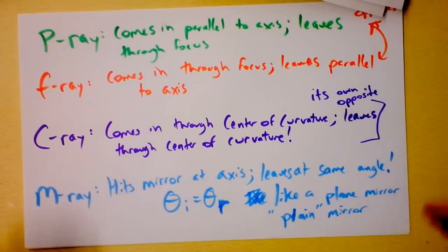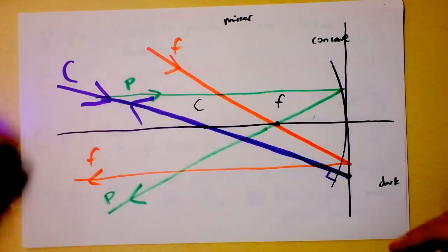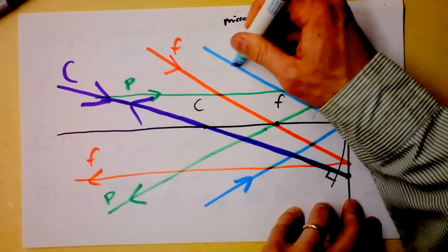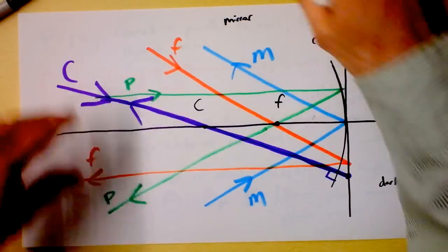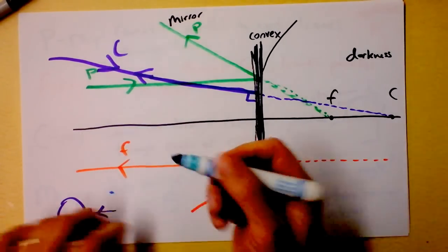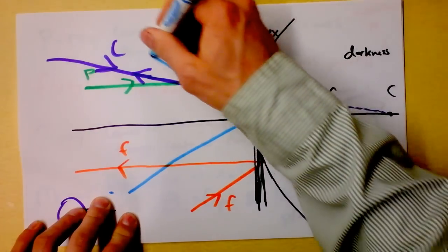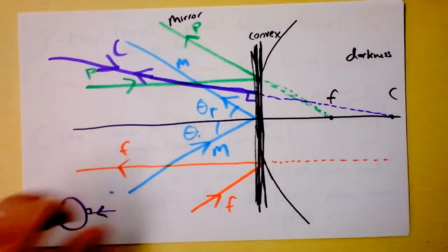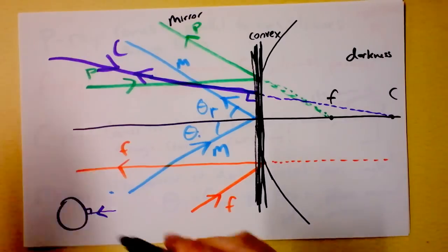A normal flat mirror — light comes in, hits the axis, and light goes out at the same angle. It has to, because that's the M-ray. The M-ray doesn't know that the mirror is curving away or in. Let's draw the M-ray for the convex mirror and then we can bask in the glory of these pictures. The M-ray comes in, hits, and bounces — it is coming in and leaving at the same angle. So this is theta incident and this is theta reflected. If you put all of these rays together, you can learn about where images are formed. We'll do that in the next video.